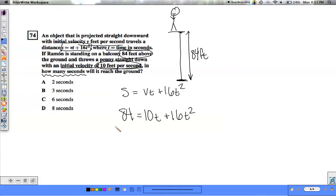From here we have a quadratic equation that we need to solve. We subtract 84 on both sides of the equation and reorganize. We end up with 16t squared plus 10t minus 84.